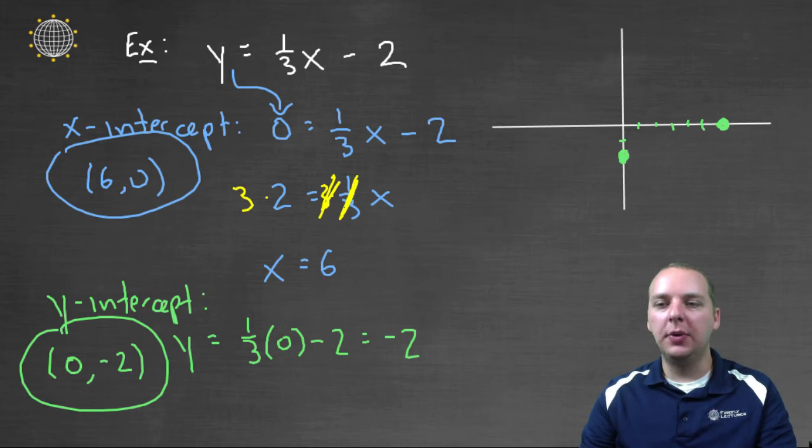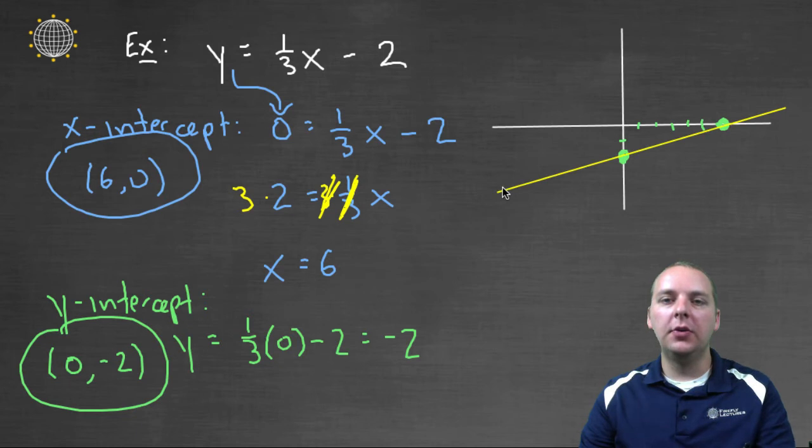So it looks like this is a pretty flat line. It'll probably look something kind of like this. That's not really very good. Let me try that again. Yeah, that's better. Okay, so this is the graph of this linear equation.